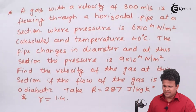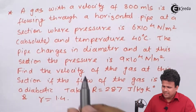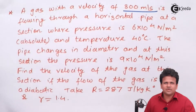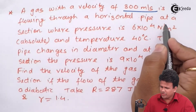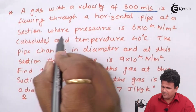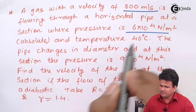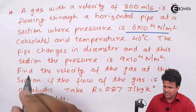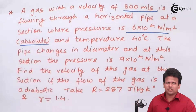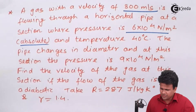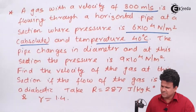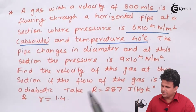We have a problem which states that a gas of velocity 300 meters per second is flowing through a horizontal pipe at a pressure of 6 × 10⁴ Newton per meter square (absolute). The temperature is 40 degree Celsius at that point.